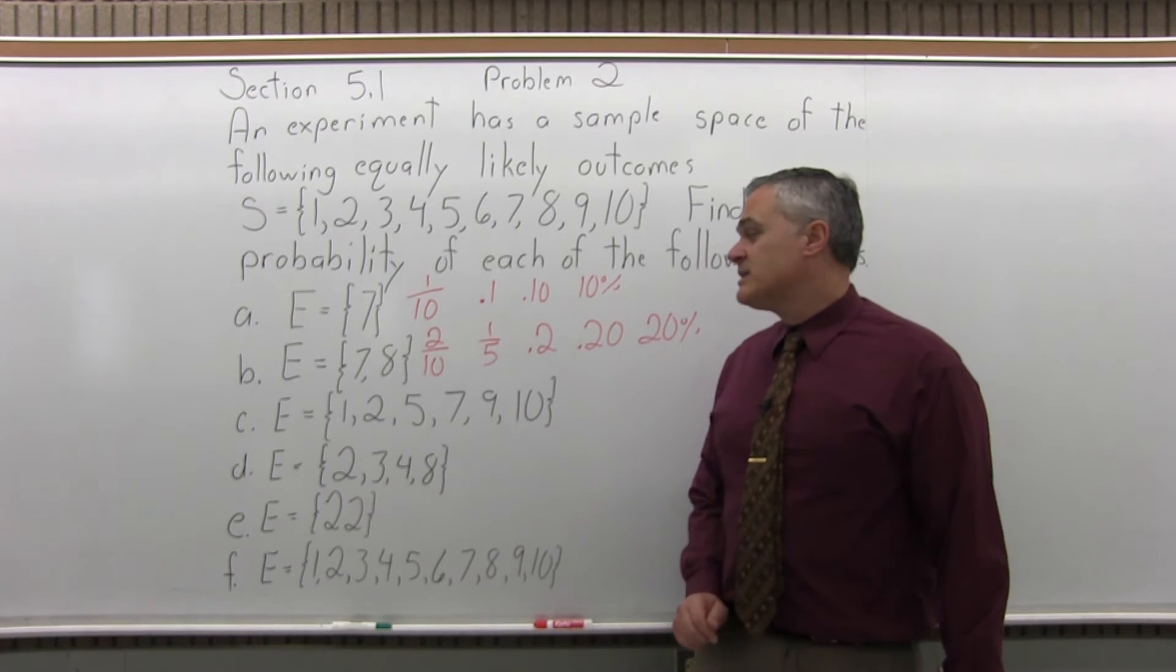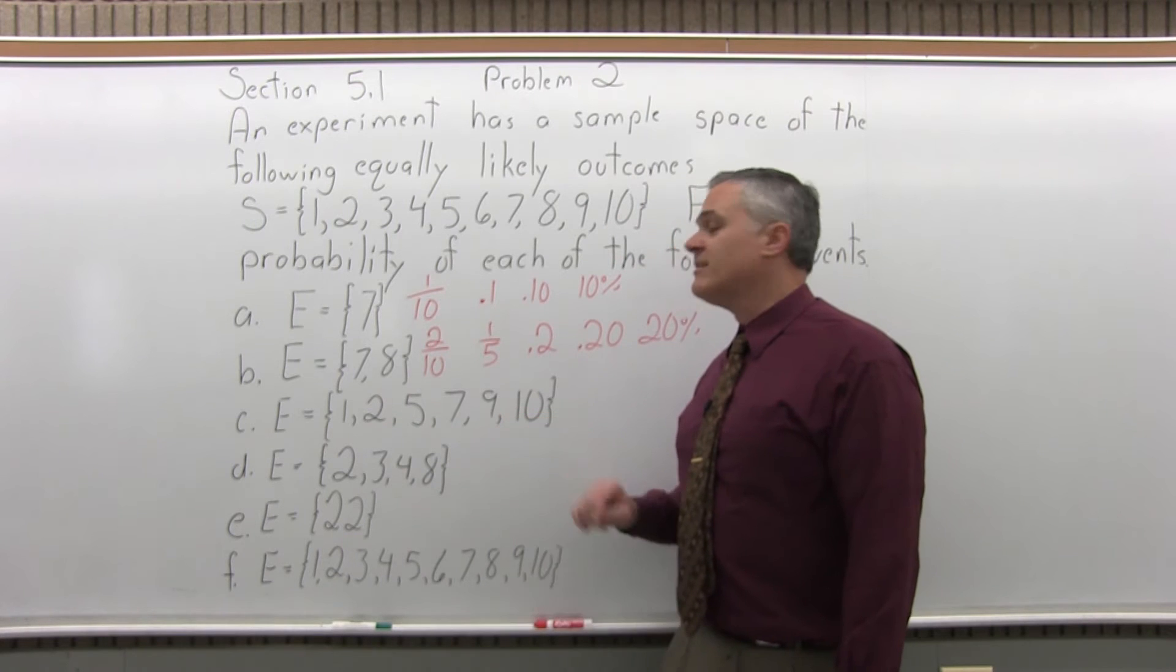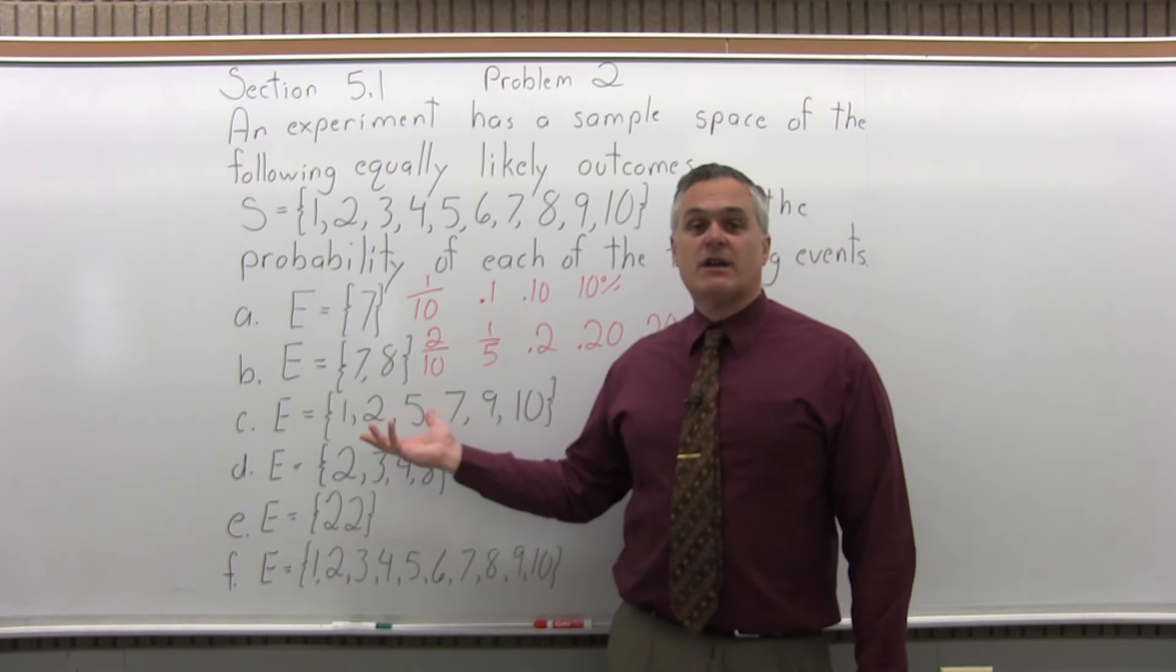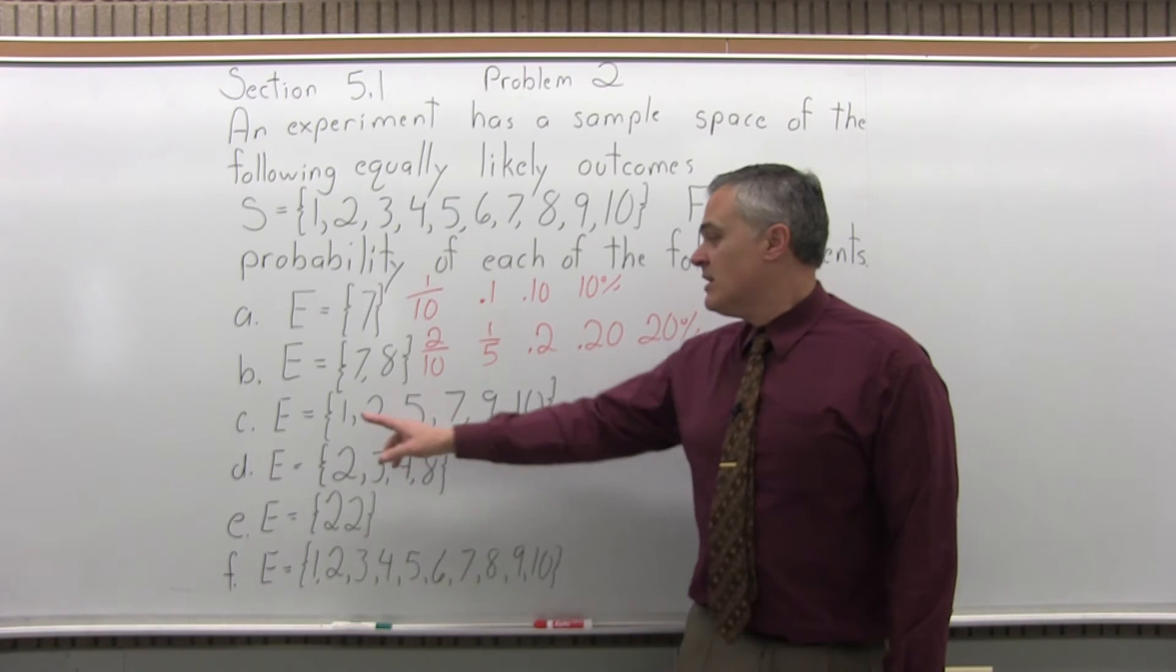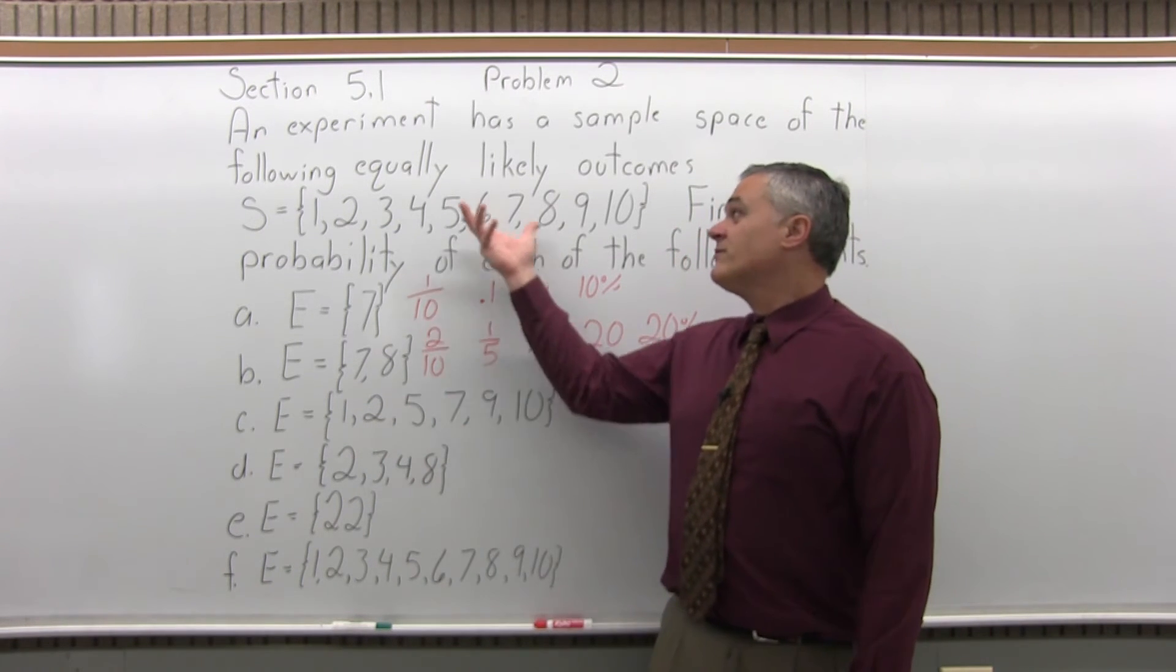Part C. What is the probability of the event of 1, 2, 5, 7, 9, 10? Well, what you have to do is see how many items are in that event. If you count them, there are 6: 1, 2, 3, 4, 5, 6 different outcomes out of 10 altogether.